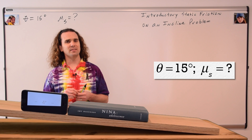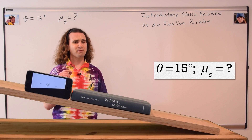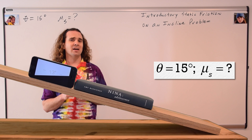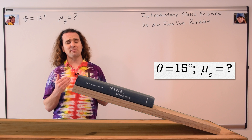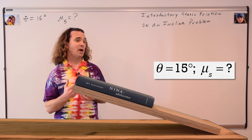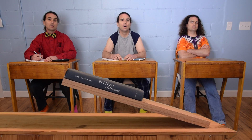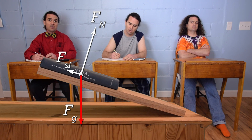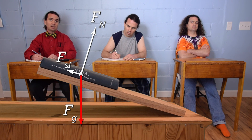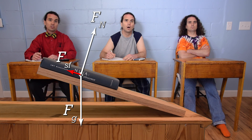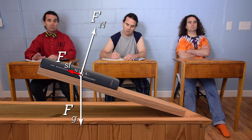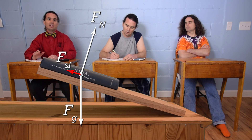Mr. P.: The moment we are interested in is the moment right before the book starts to slide, and the angle of the incline at that moment is 15 degrees. Billy, please give us a free body diagram of all the forces acting on the book right before it starts to slide. Billy: The force of gravity is down. The board pushes up on the book — the force normal — which is perpendicular to the incline and up. The force of static friction is parallel to the incline and opposes motion. Without friction, the book would slide down, so static friction is up and parallel to the incline.